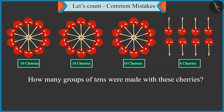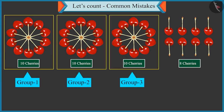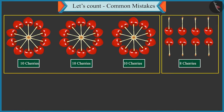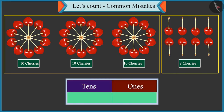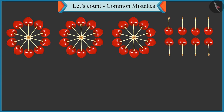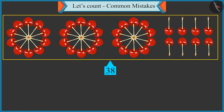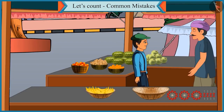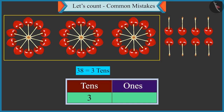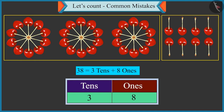How many groups of tens were made with these cherries? There are three groups of ten cherries here. Now tell me, how will you write three groups of tens and eight single cherries in the form of tens and ones? Three will come in the box of tens and eight will come in the box of ones. Very good.